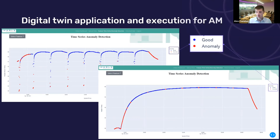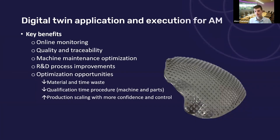The machine models can be updated over time, allowing for digital analysis to evolve with the machine, highlighting undesirable machine drift and leading to an improvement of preventative maintenance scheduling. The key benefits of this digital twin approach are the online monitoring capabilities, a reduction in the need for in-person quality checks, the ability to highlight machine-to-machine variance and the variance in a single machine over time, a reduction in material and time wastage, and greater confidence and control when scaling up production runs.